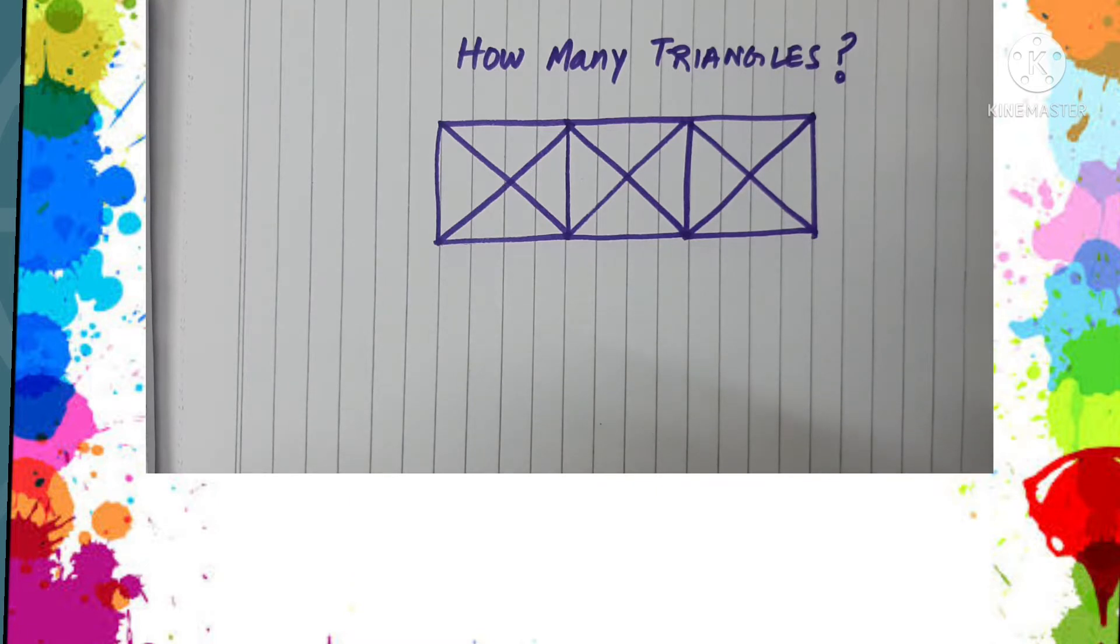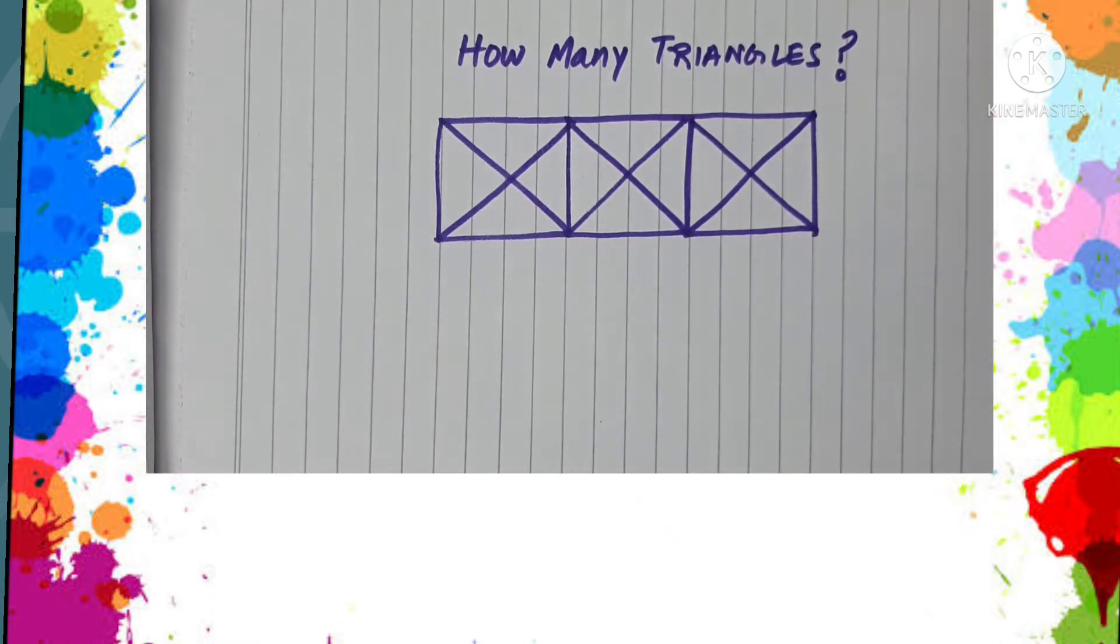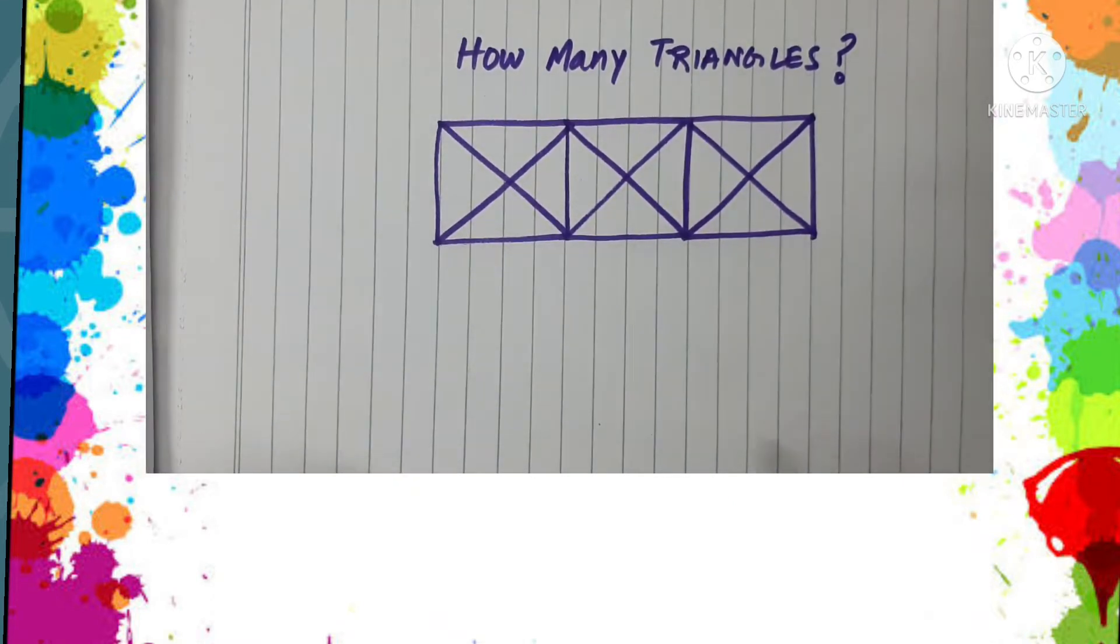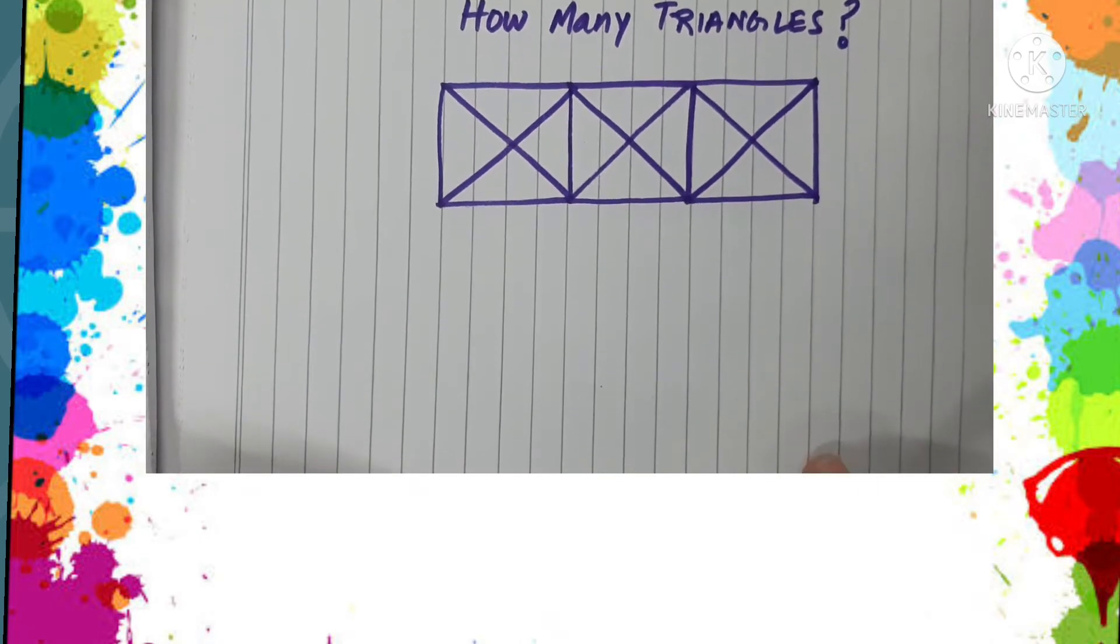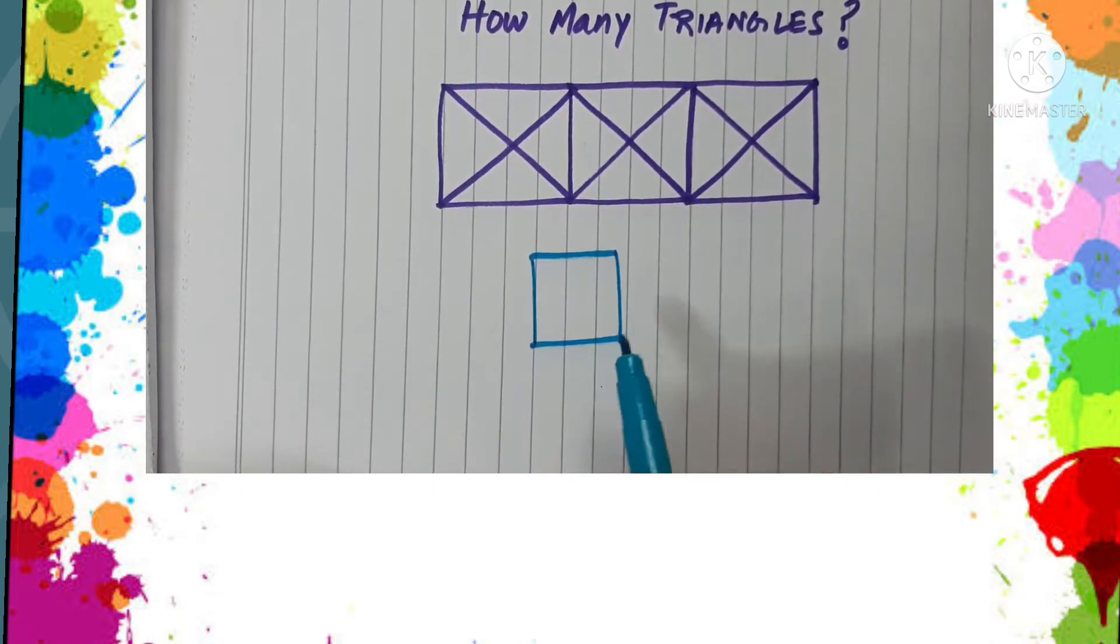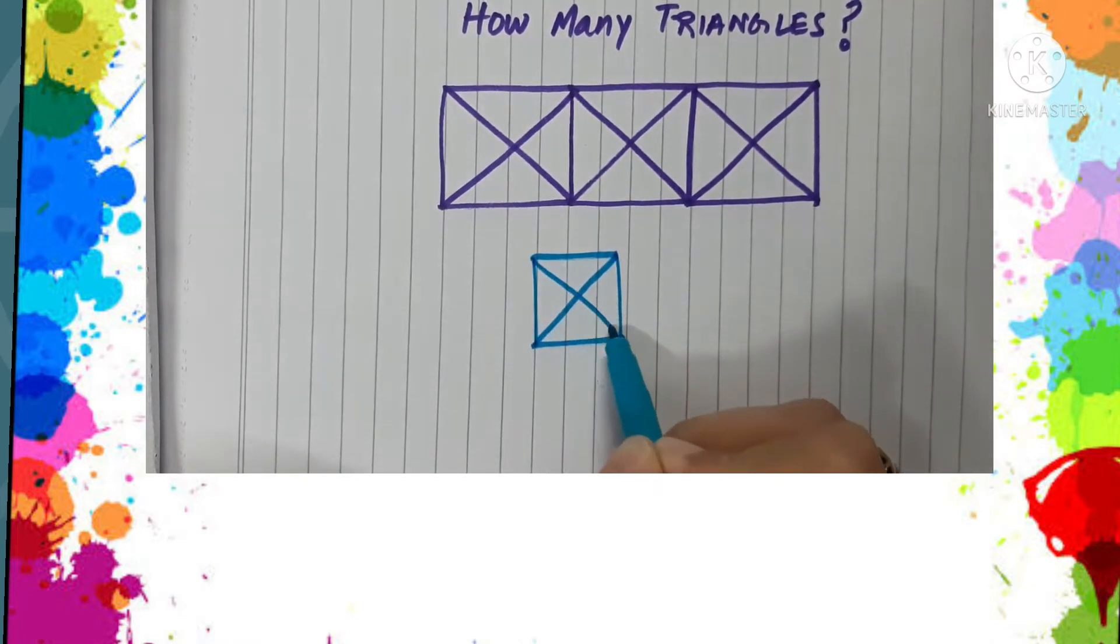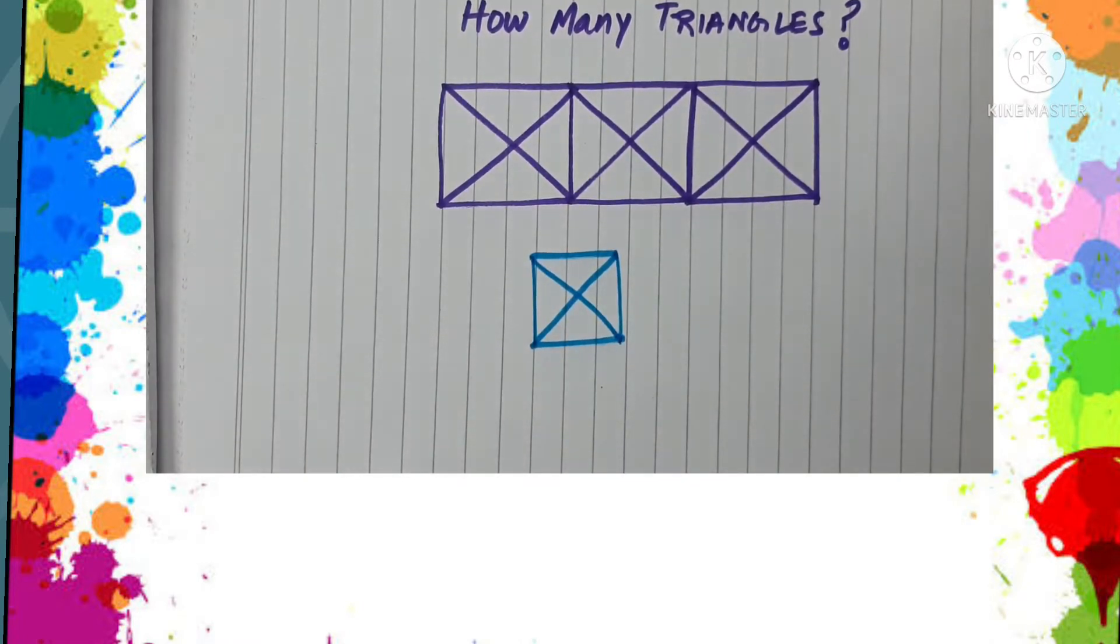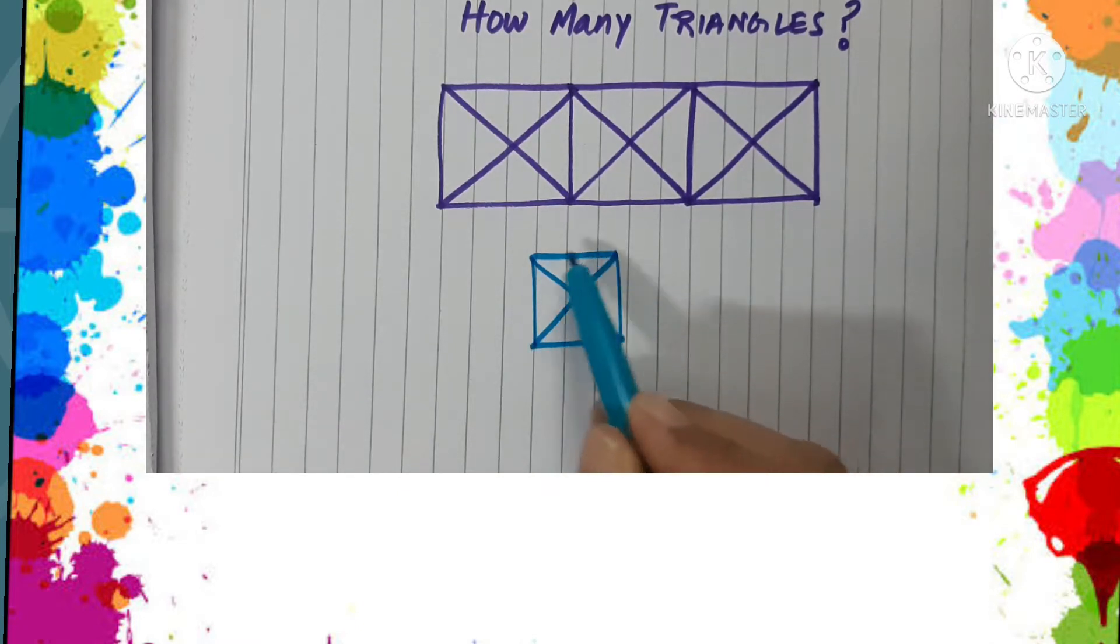Okay, let us see how we solve such puzzles. So here, how we count the number of triangles? We see that here in this figure, a square is divided into a number of triangles by joining the diagonals.